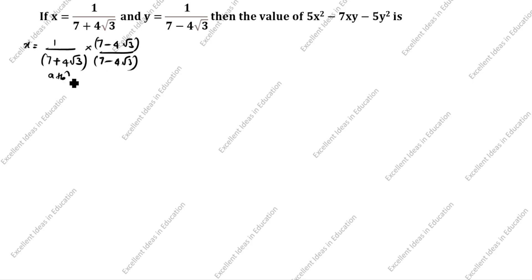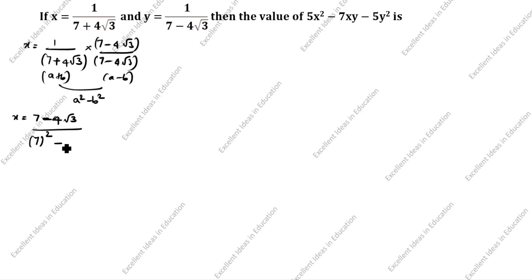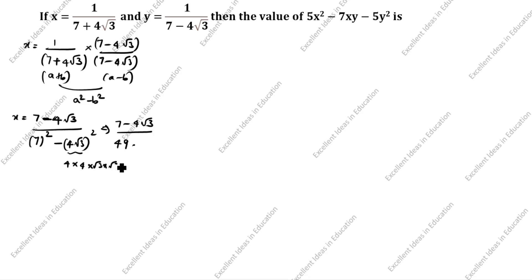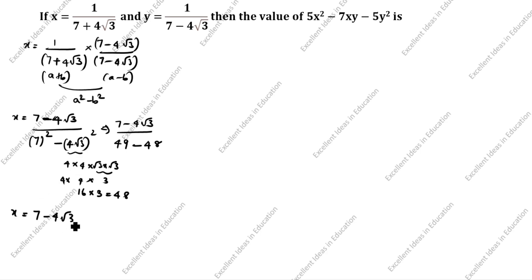You see the denominator — this is a plus b, this is a minus b. What is the a plus b times a minus b formula? It is a square minus b square. So x is equal to 7 minus 4 root 3, divided by 7 square minus 4 root 3 the whole square. That is 49 minus 48, which equals 1. So x is equal to 7 minus 4 root 3.